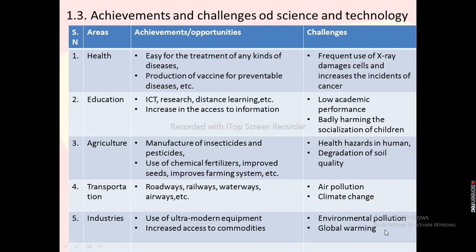In the area of agriculture, achievements include manufacture of insecticides and pesticides, use of chemical fertilizers, improved crop varieties, and improved farming systems. Challenges include health hazards in humans and degradation of soil quality. In transportation, achievements include railways, airways, waterways, and roadways; challenges include air pollution and climate change. In industries, achievements include use of ultra-modern equipment and increased access to commodities; challenges include environmental pollution and global warming.